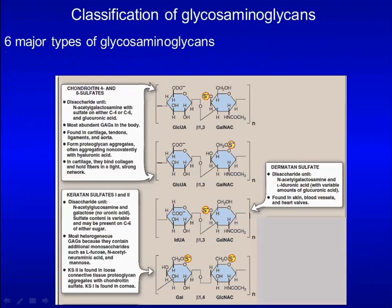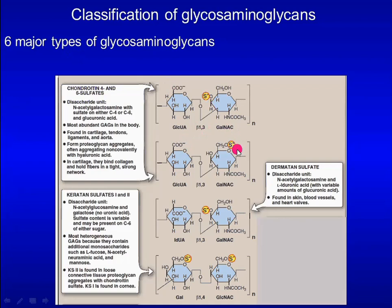Glycosaminoglycans are classified into six major types. The first type is chondroitin 4 or 6 sulfate. This is a standard glycosaminoglycan. D-glucuronic acid provides the acidic sugar. N-acetylgalactosamine provides the amino sugar. The two sugars are joined together by a beta-1,3 glycosidic bond. A sulfate group is added at either the C4 or C6 position.